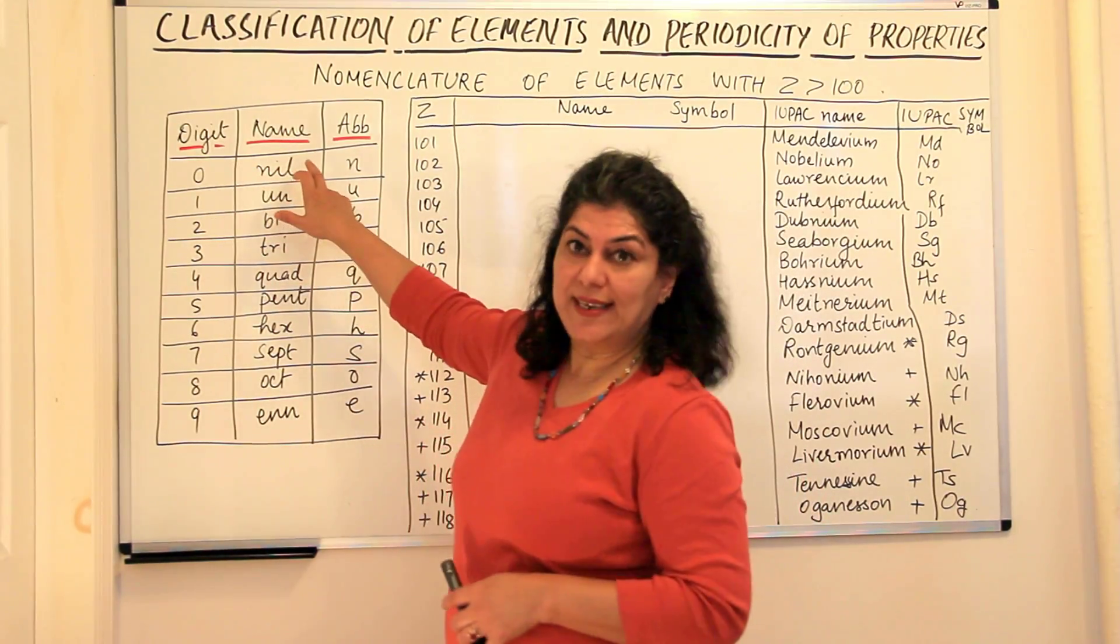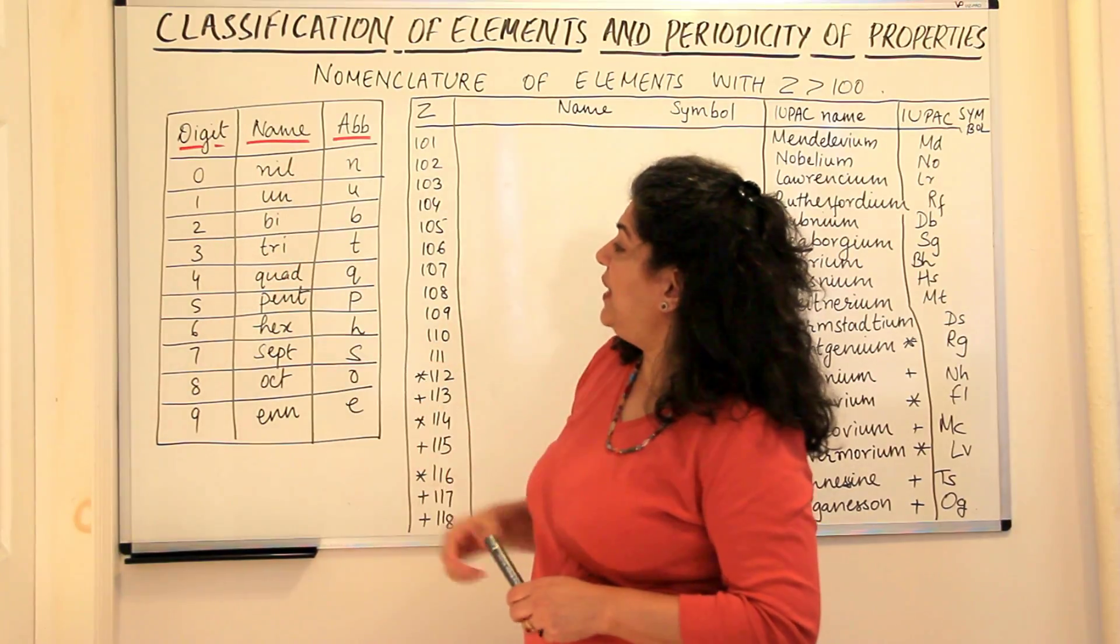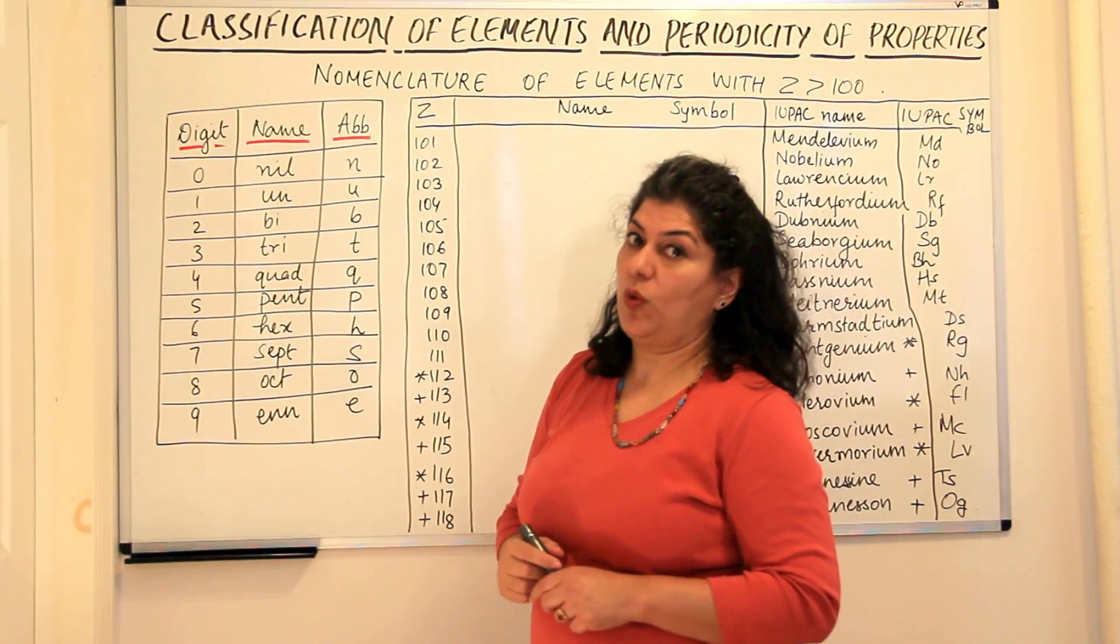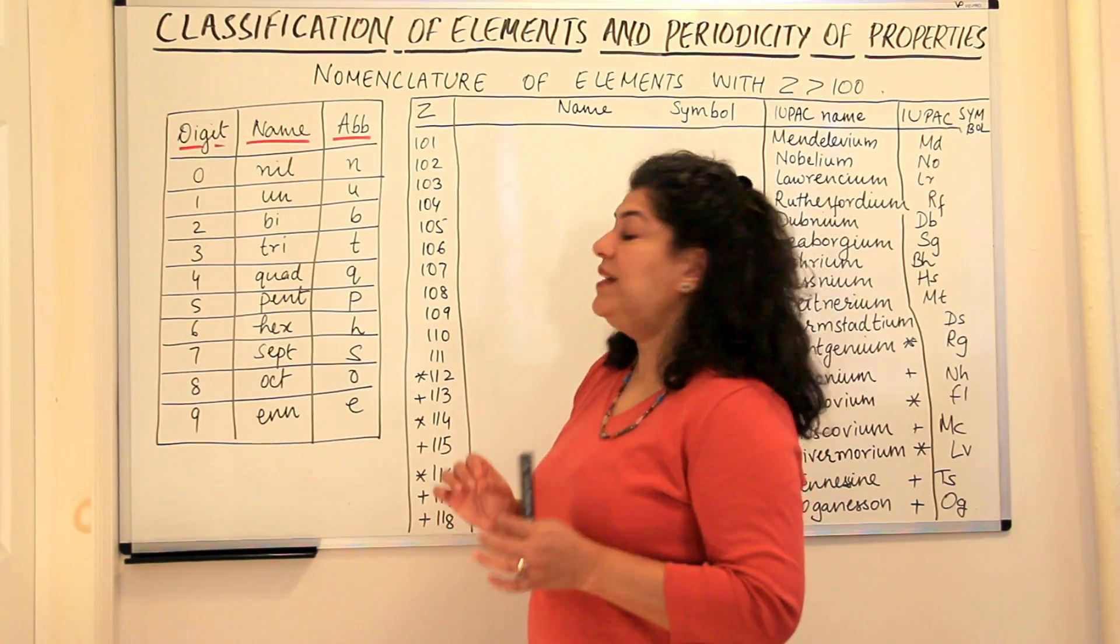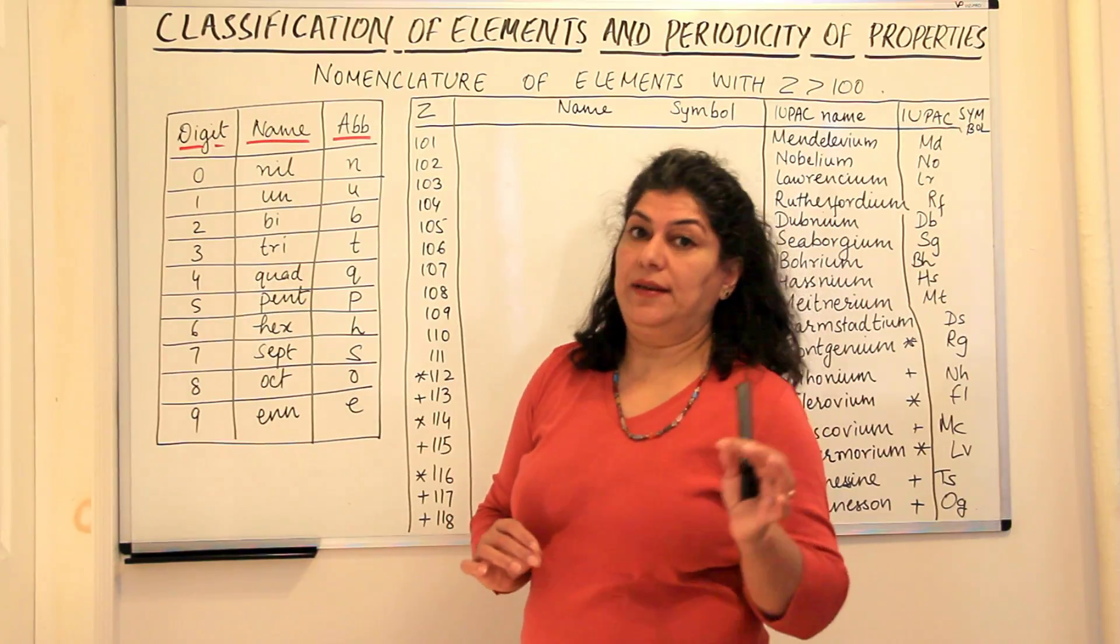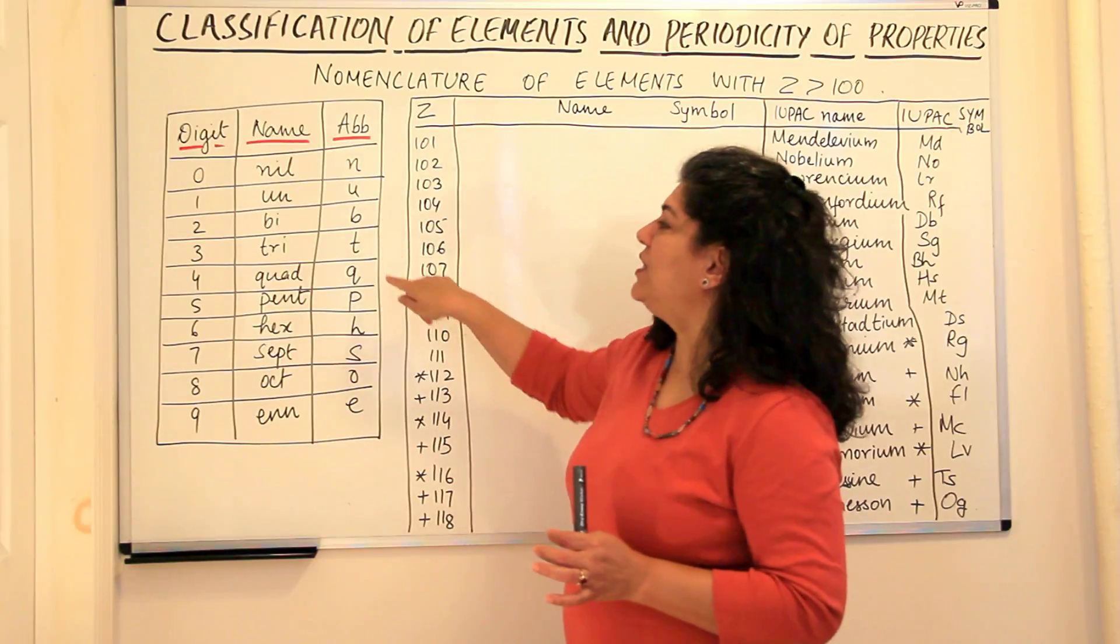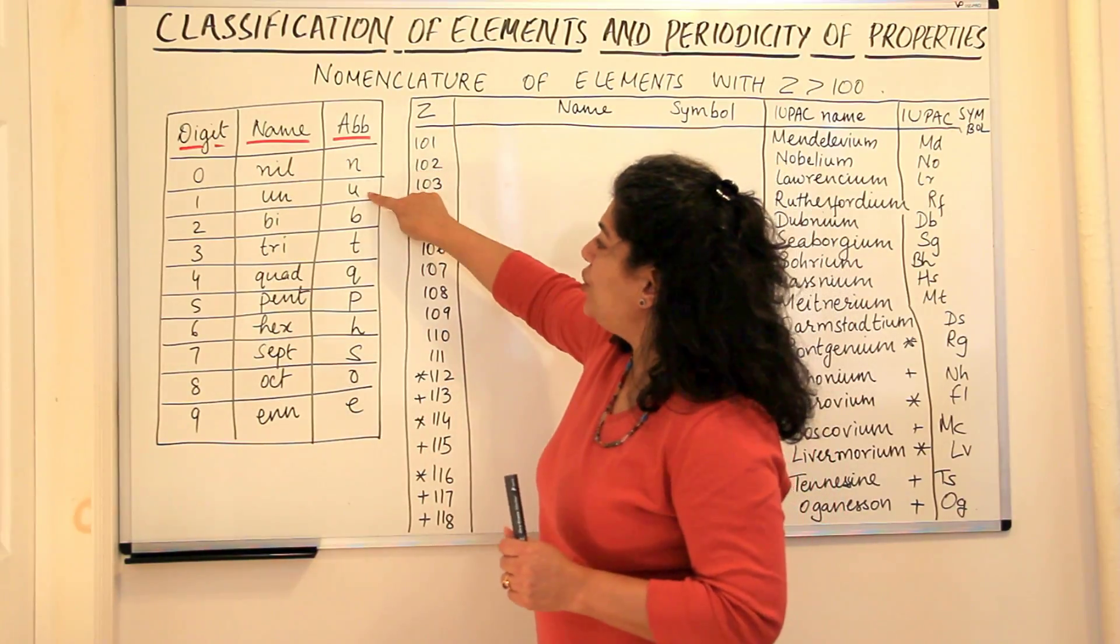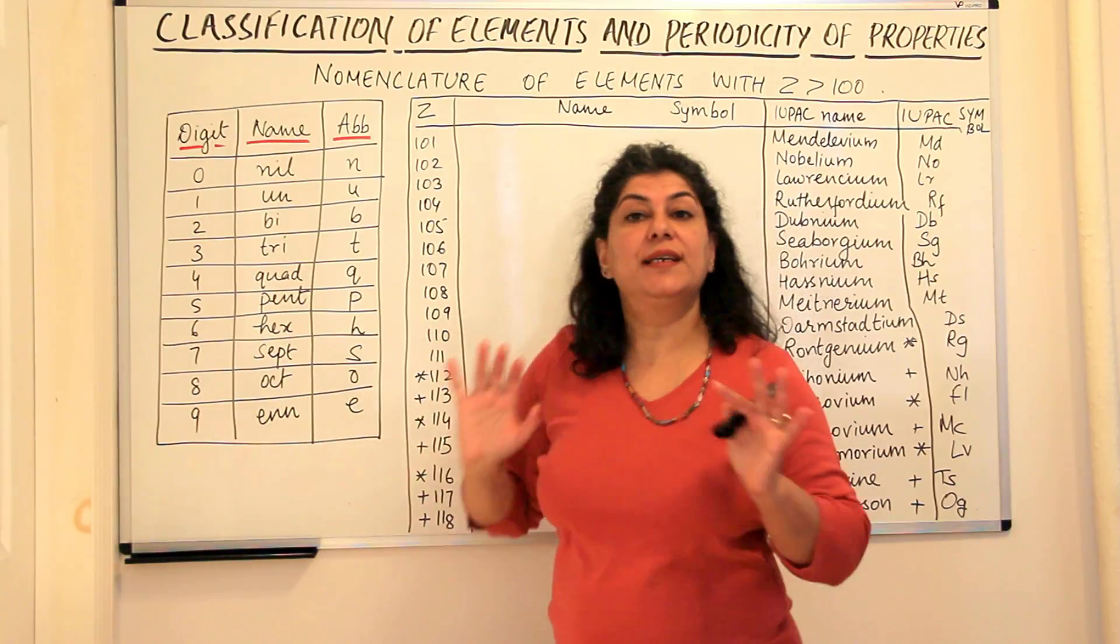Zero was known as nil, one is un, two is bi, three is tri, four is quad, five is pent, six is hex, seven is sept, eight is oct and nine is en. The first alphabet becomes the symbol: n, u, b, t, q, p, h, s, o and e.